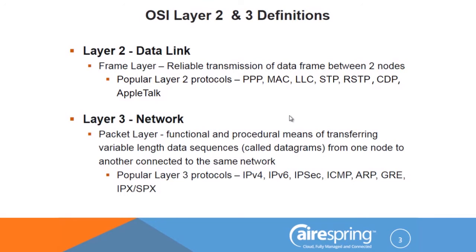At Layer 3, we take the framed data with error correction and now packetize it, putting certain addressing on it for different applications. The network layer — also called the packet layer — provides the functional and procedural means of transferring variable-length data sequences called datagrams from one node to another connected in the same network. Layer 3 is looking for a network to provide routing and addressing. Your Internet at home is a Layer 3 network running on IPv4, soon to be IPv6. You'll notice newer cell phones have an IPv6 address — longer, more of them.